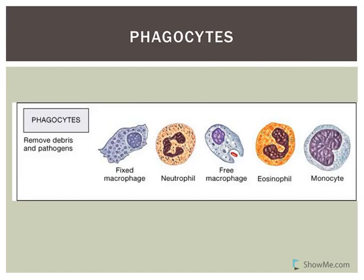Before we go over each individually, I want to discuss collectively some of the functions of white blood cells. Some of them are phagocytes — literally cell eaters. The monocytes are very important phagocytes; in tissues they become what are referred to as macrophage. The neutrophils and eosinophils are referred to as microphage — they are also phagocytes, with the ability to engulf debris or cells.